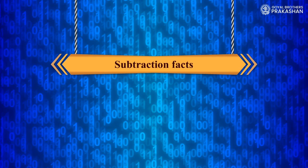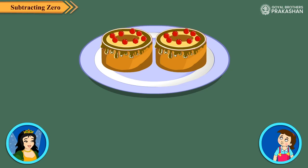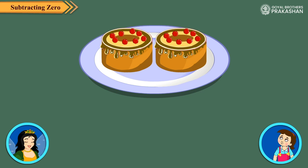Subtraction Facts. Now Neha, look at this plate. There are two pastries. If I will not take any of them, then how many pastries will remain on the plate? Two.